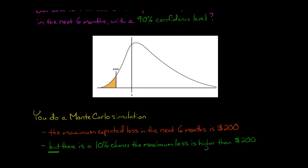That doesn't mean it can't be worse than that. There's a 10% chance, and that's the shaded area here. There could be a worse outcome - it could be a $500 loss, it could be a $700 loss. There could be a larger loss.